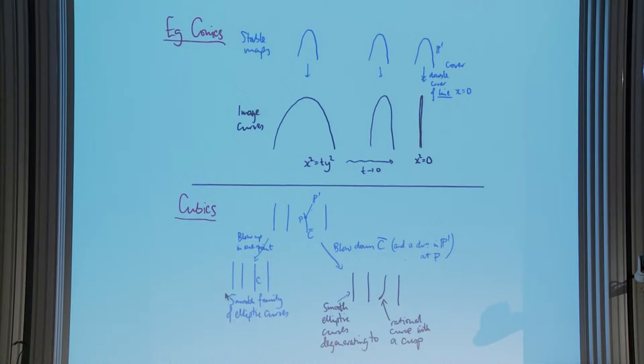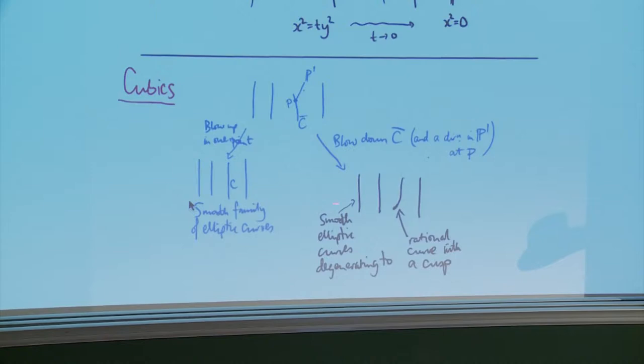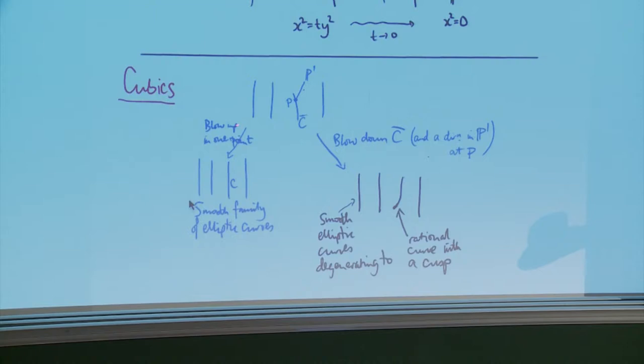Another example: smooth elliptic curves — cubics in P2 — degenerating to a rational cubic curve, a cuspidal elliptic curve. One way is to take a smooth family of elliptic curves, blow it up at a point, and get a smooth family except the central fiber is an elliptic curve with a P1 attached. That elliptic curve is negative in the surface so you contract it, and when you do you also contract an infinitesimal direction up the P1, ending up with a P1 with a cusp.